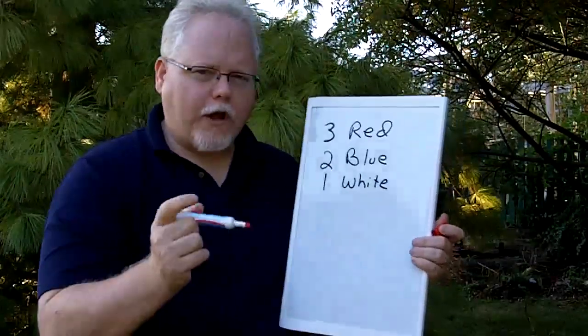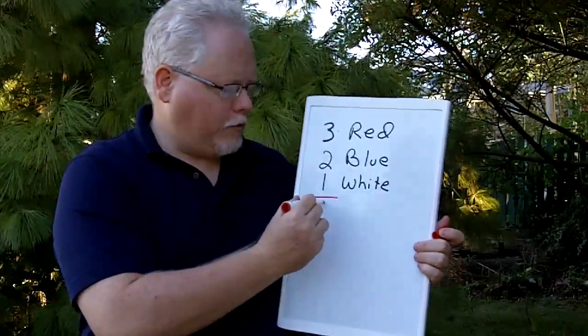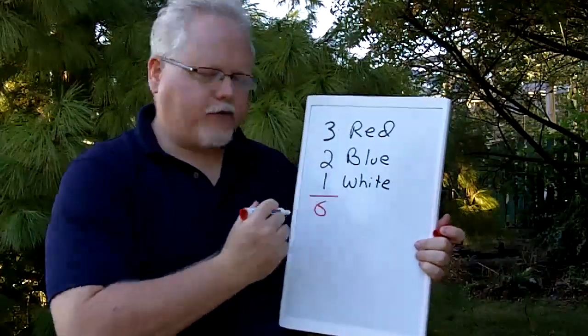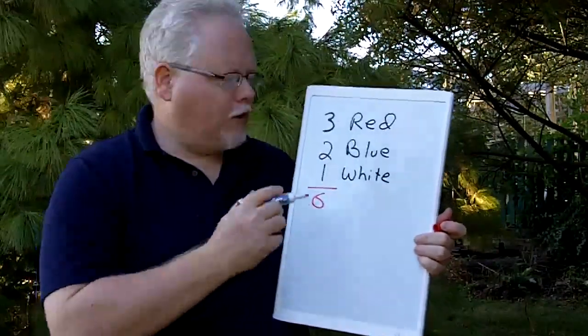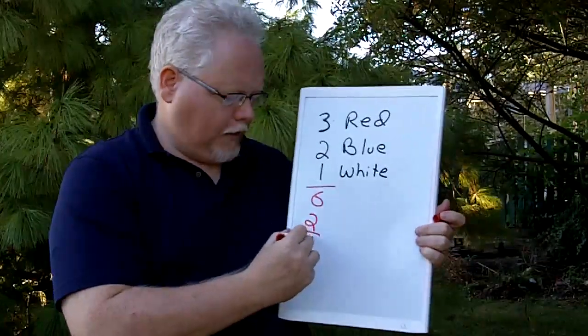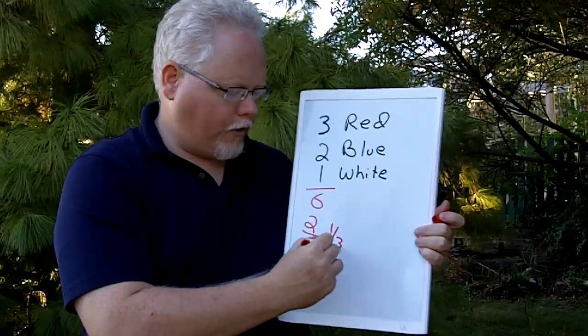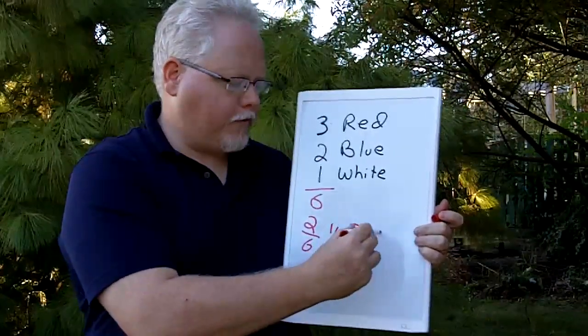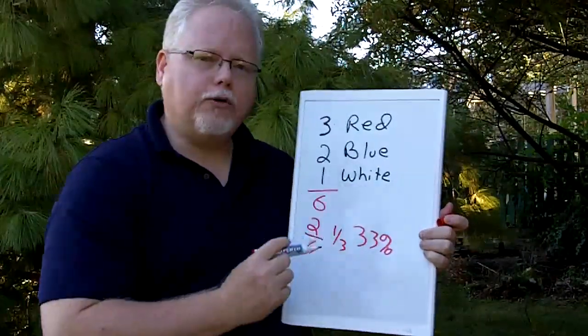We can learn a couple things from this. First of all, what you do is you add up the total number of possibilities. There's a total of six socks. But two of them are blue. So your odds are two in six, two six, or one-third, or 33%, that you're going to grab a blue sock.